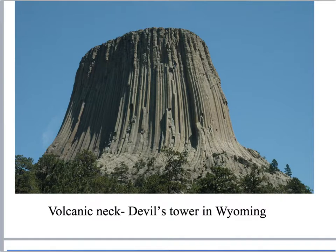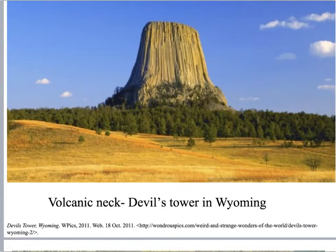A famous volcanic neck is called Devil's Tower, located in Wyoming. You can see where the magma was sort of forced up around the outside surrounding rock. In this farther-distance view, you can imagine the volcano would have been up here and come back down here. All of the volcano on the outside eroded away, and that left just the neck.